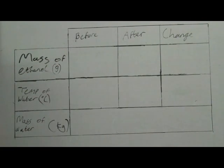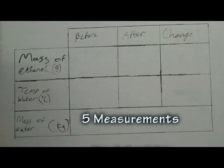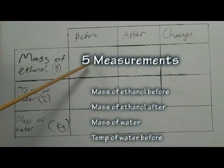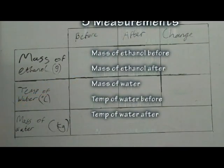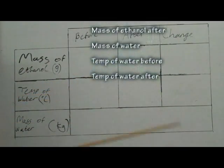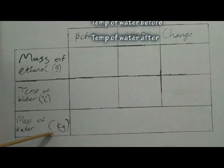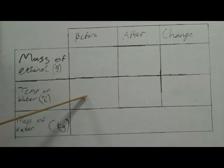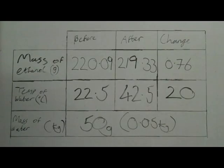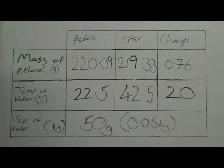The five measurements that were made during the experiment: the mass of ethanol burner before, the mass of ethanol burner after, the mass of water, temperature of water at the start, and temperature of water at the end. We worked out the change of the mass of the ethanol to be 0.76 grams and the change in temperature of the water to be 20 degrees Celsius.